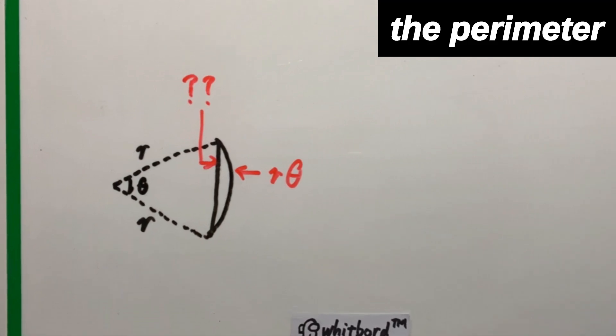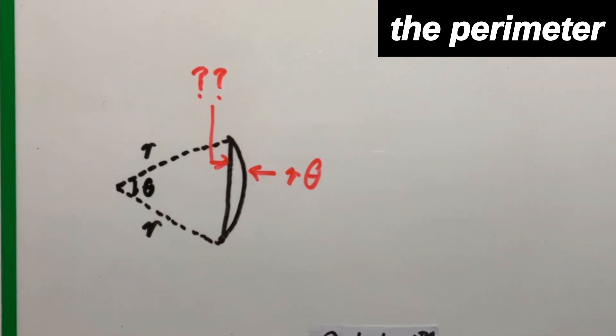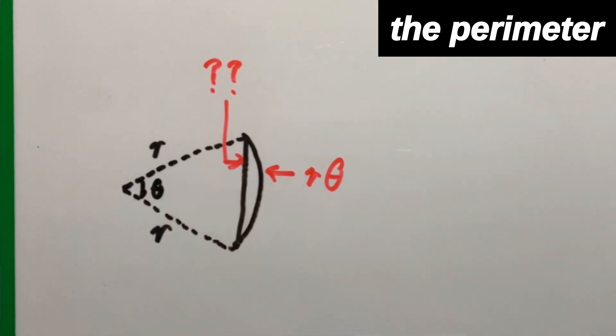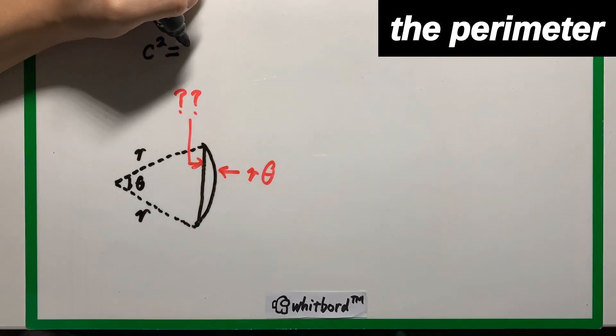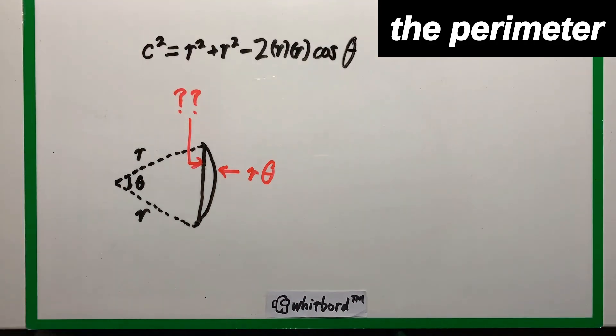Now, given this information that you have, how do you find the segment? That's right, you can use the cosine rule, and given the sides r and angle theta.